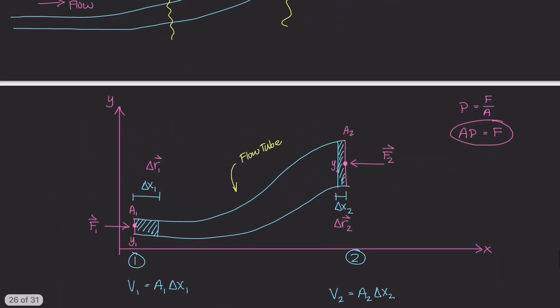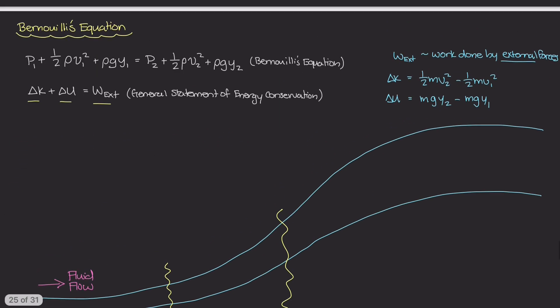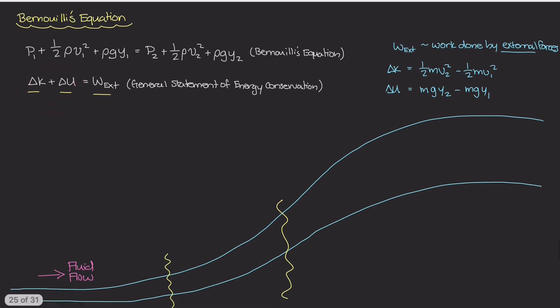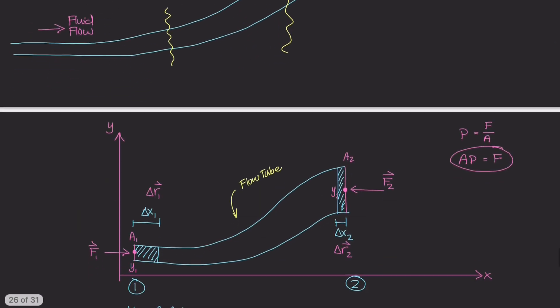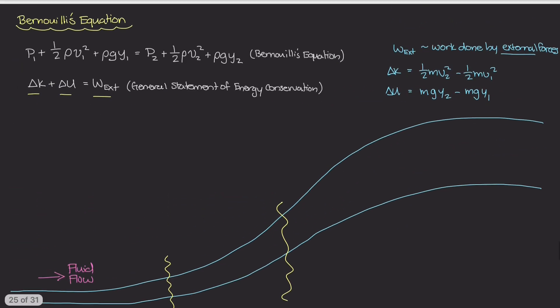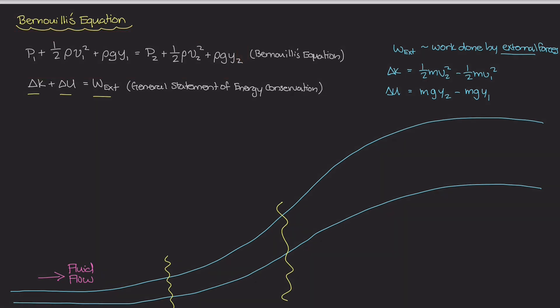So we have figured out one term in this general statement of energy conservation — the external work. In the next video, I want to look at the kinetic and potential energies of this system, and then we'll be able to derive the full Bernoulli's equation. See you then.